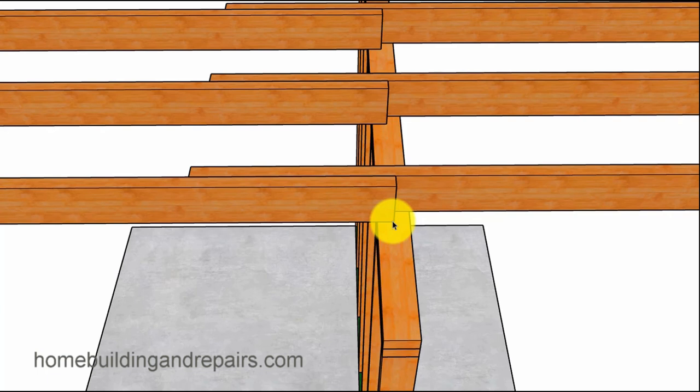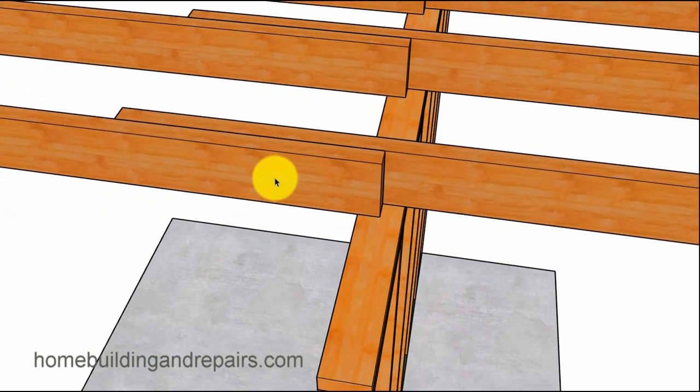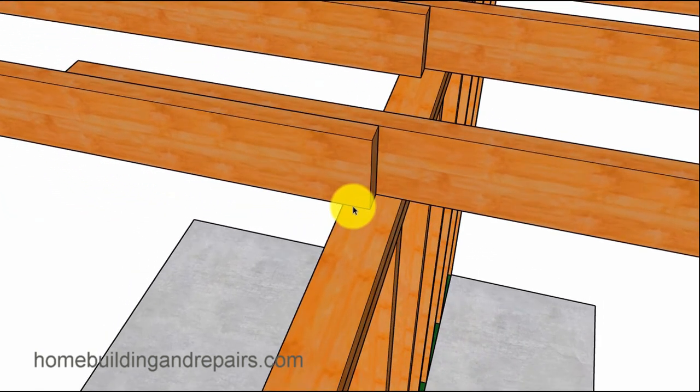An inch and a half is usually the minimum distance a load-bearing framing component - roof rafters, ceiling joist, beam - can sit on a wall to transfer the load effectively. So, inch and a half from the edge to here.